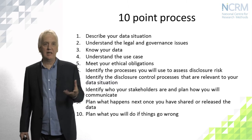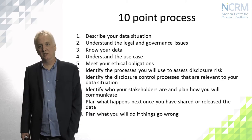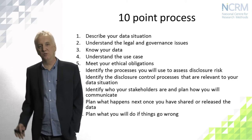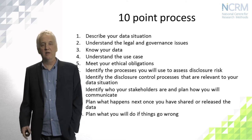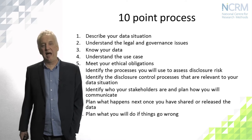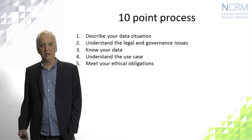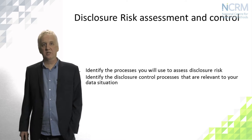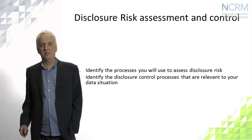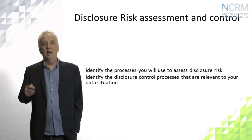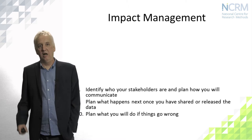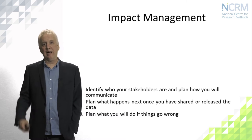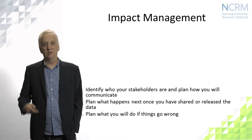There is a 10-point process to the Anonymisation Decision-Making Framework. There are three different activities within it. The first is the data situation audit, which is made up of the first five points. The second is disclosure risk assessment and control — that's the technical part of the process. And the third is impact management, which covers the soft processes you have to go through to make sure that any impact of a breach is reduced should things go wrong.